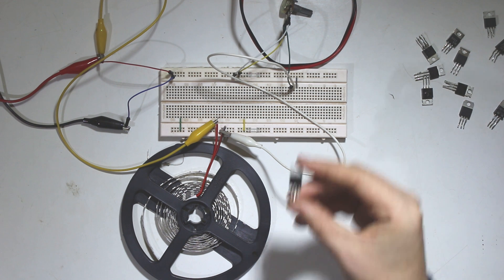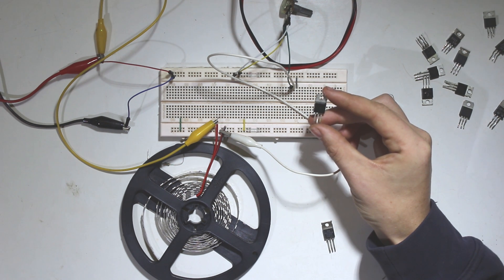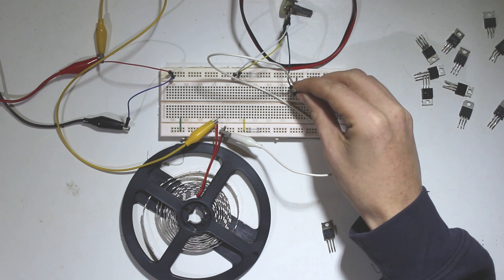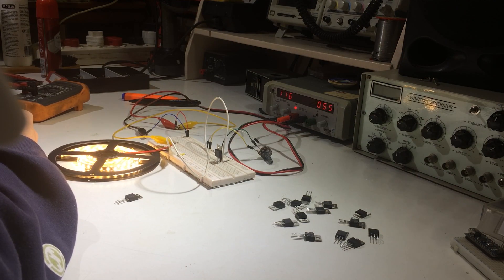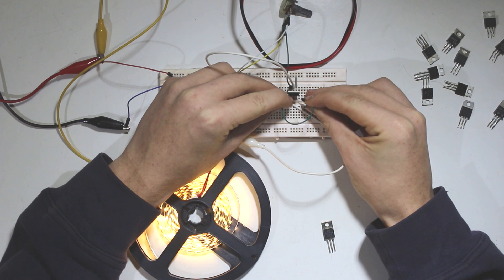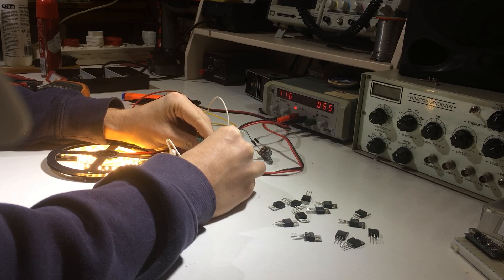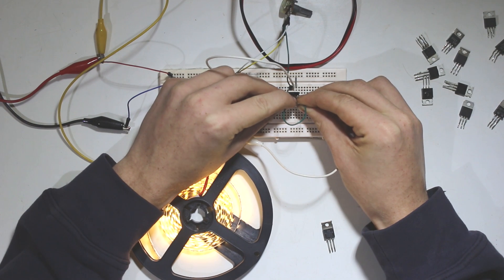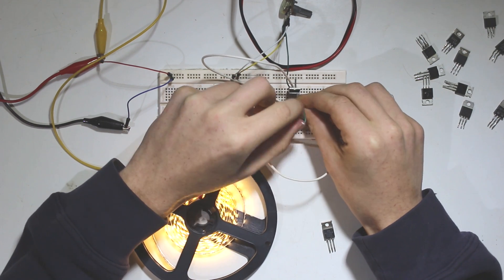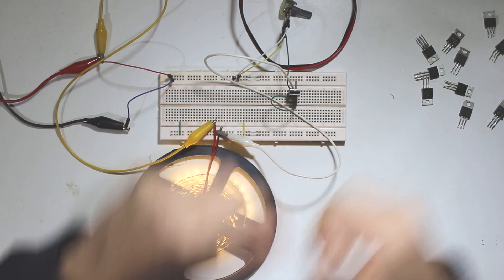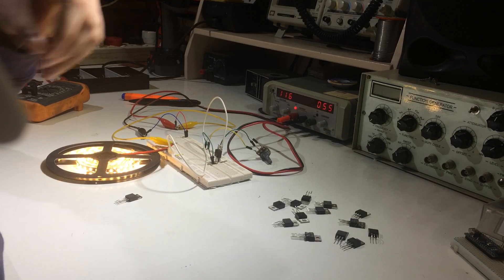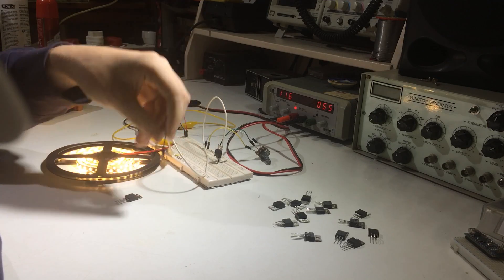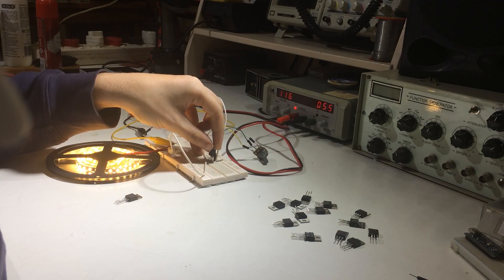Now of all the transistors that I tested, this FQP50N06 appeared to supply the most current at 5 volts. Now if we connect it, it works pretty well. Now let's see what happens if we short it. If we short the drain and source pretty much bypassing the transistor altogether, then there is no change in the current. So that means this transistor is pretty much as efficient as it can be at this voltage, which means this is ideal for the type of load that we are running now.